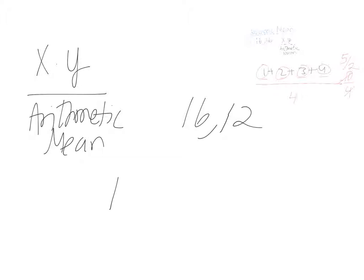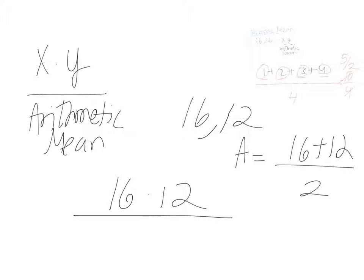Then I'll do 16 times 12 over our arithmetic mean. So let me first calculate the arithmetic mean, which is 16 plus 12 divided by 2. And 16 plus 12 is 28. And if you divide 28 by 2, that is 14.